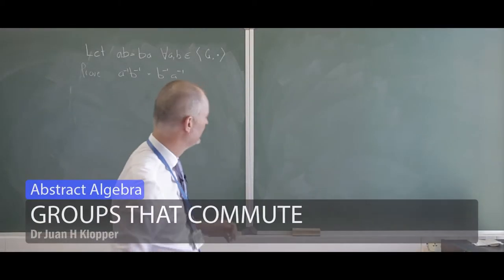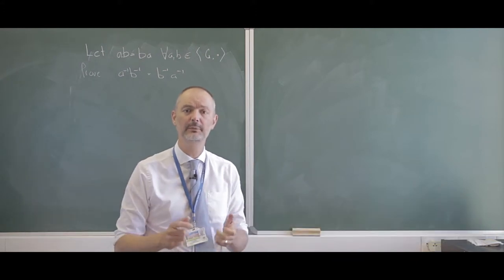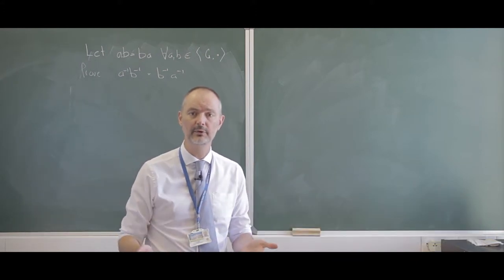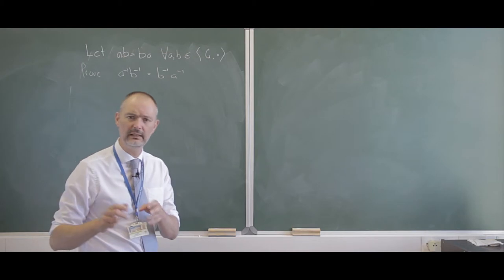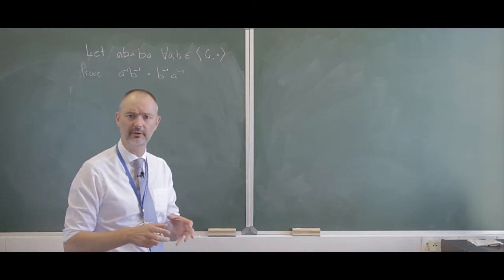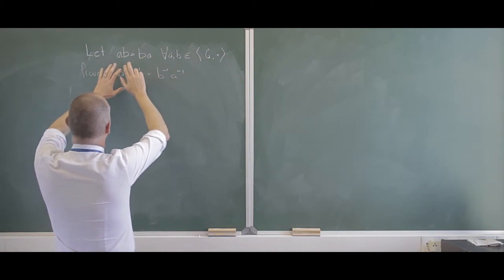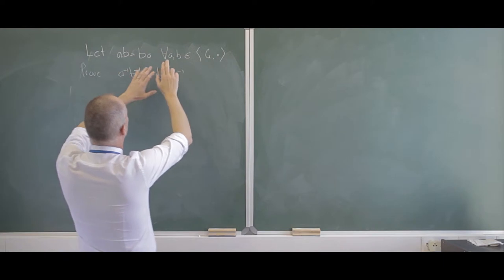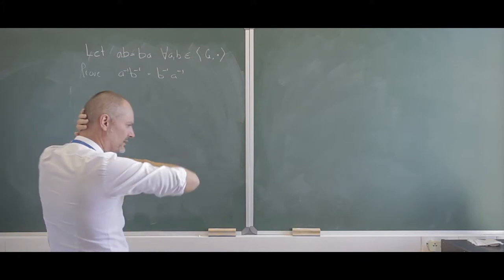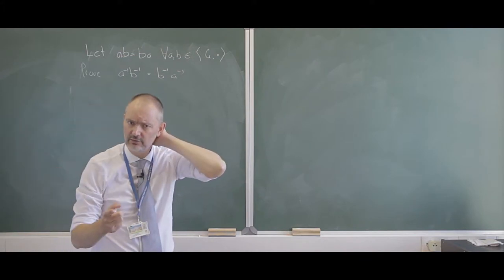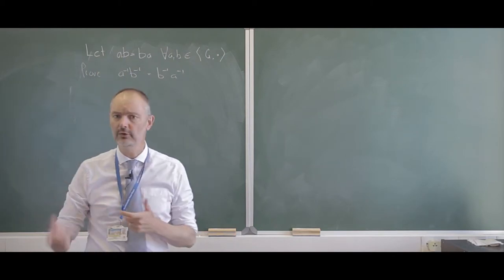Let's have a look at commutativity. Remember, it's not part of the definition of groups, but you might find that in some groups some elements do commute. That will be a special kind of group — it's definitely not true for groups in general. We're going to let AB equals BA for all A, B elements of some group G under multiplication, and if this is true, show that the inverses of A and B also commute.